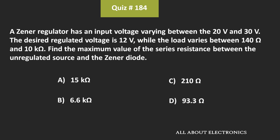Here we have been given the range of the input voltage as well as the range of the load resistance. And we have been given that the desired value of the regulated voltage is equal to 12V. We have been asked to find the series resistance required between the input and the Zener diode.